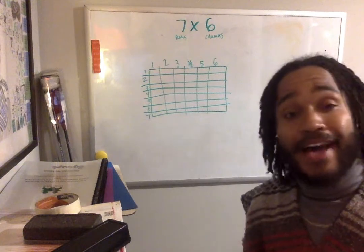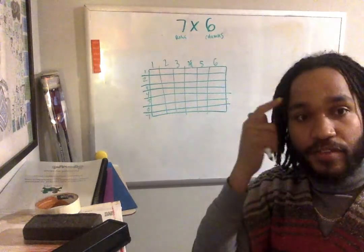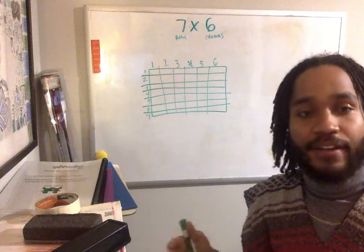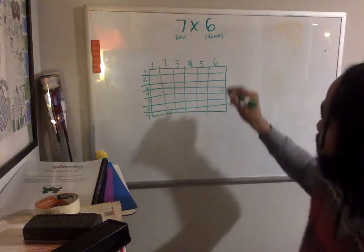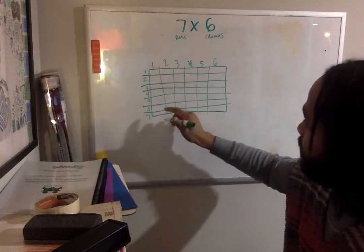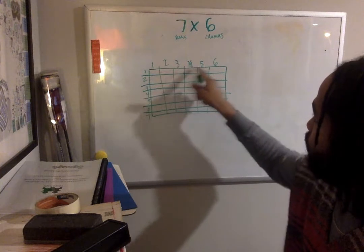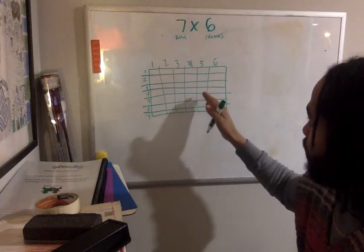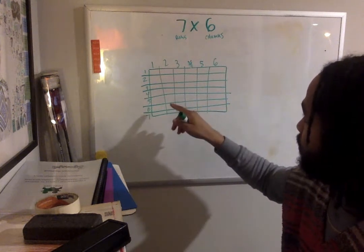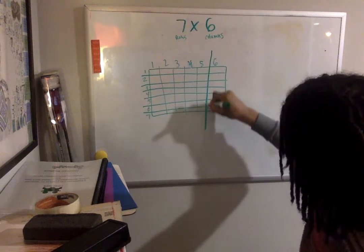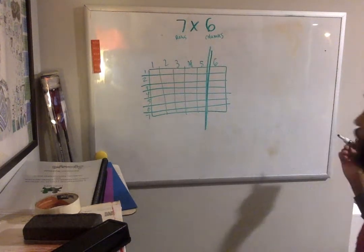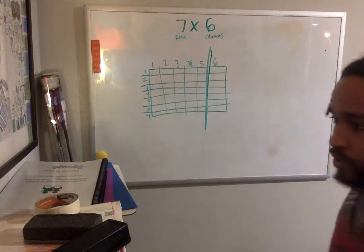Now, a lot of kids may not know seven times six off the top of their head, but they know a lot of their five times table. So what I'm going to do is I see that this has five columns, but then I'm going to split it like this. Just like that. So now I have two smaller arrays.